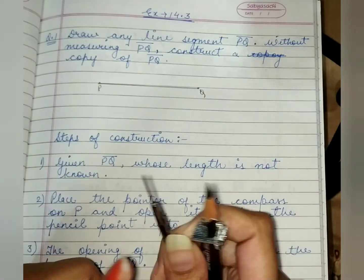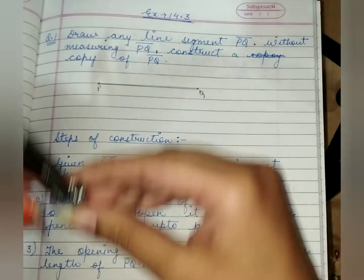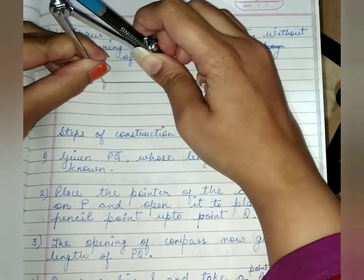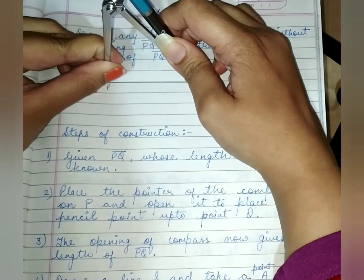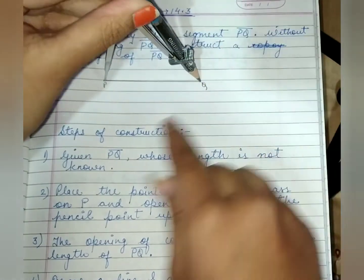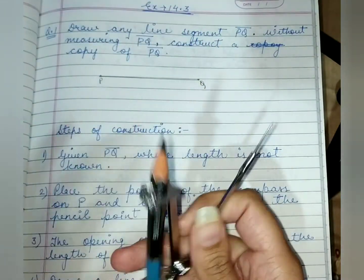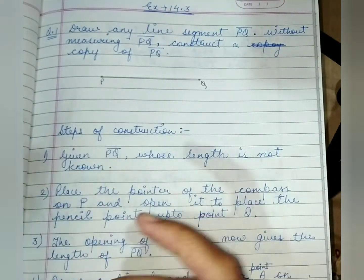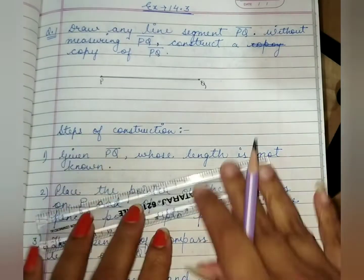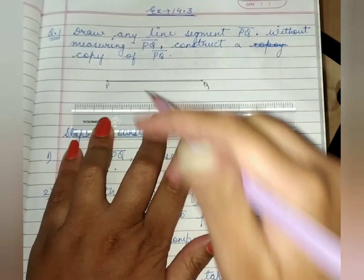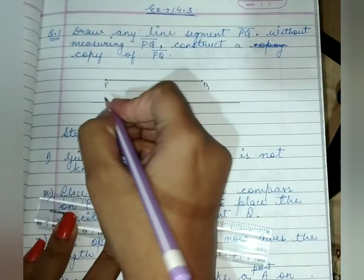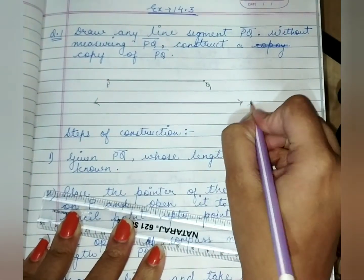Now we will take a compass and place the pointer on P. We will open it to Q — we have to open it to Q. Now the length of PQ is captured; the measurement of PQ is coming. Now we have to draw one line and name it line L.